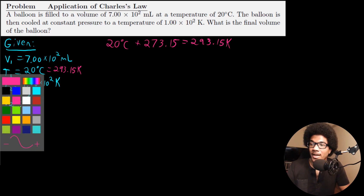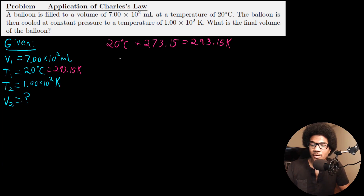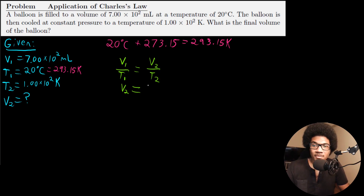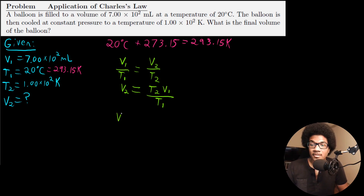Applying Charles's Law: V1 / T1 = V2 / T2. We're solving for V2, so isolating it by multiplying both sides by T2 gives us V2 = T2 × V1 / T1. Now we just plug in and solve.